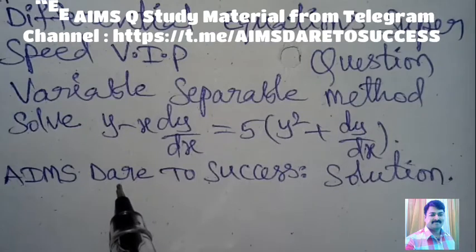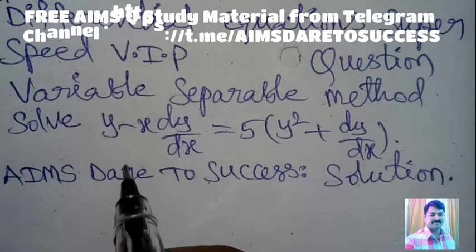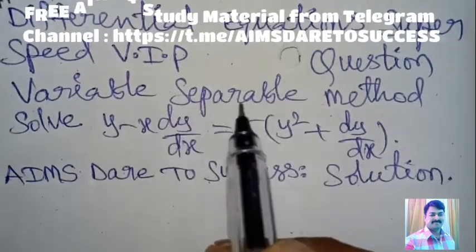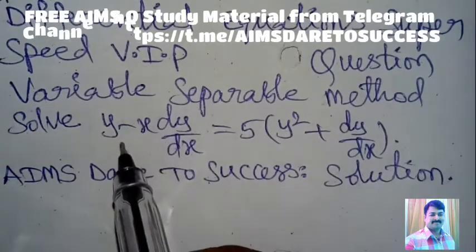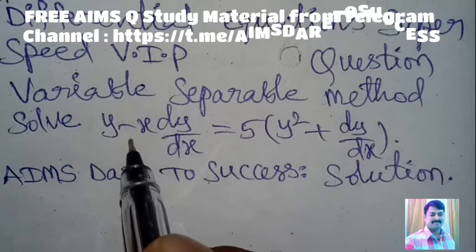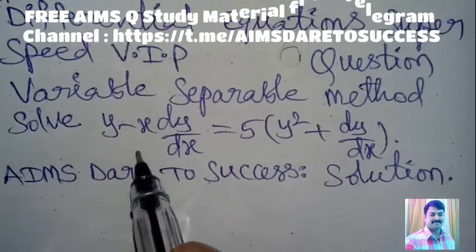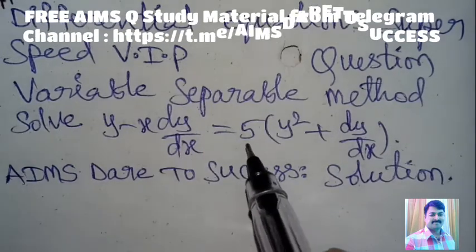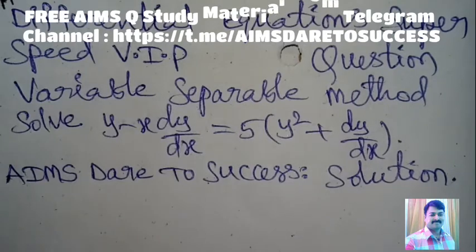Hi, hello, namaste my dear friends and students. Today I wanted to discuss differential equations — super speed VIP equation, variable separable method, partial fractions related problem. The question is: solve y minus x times dy/dx equals 5 times (y squared plus dy/dx).